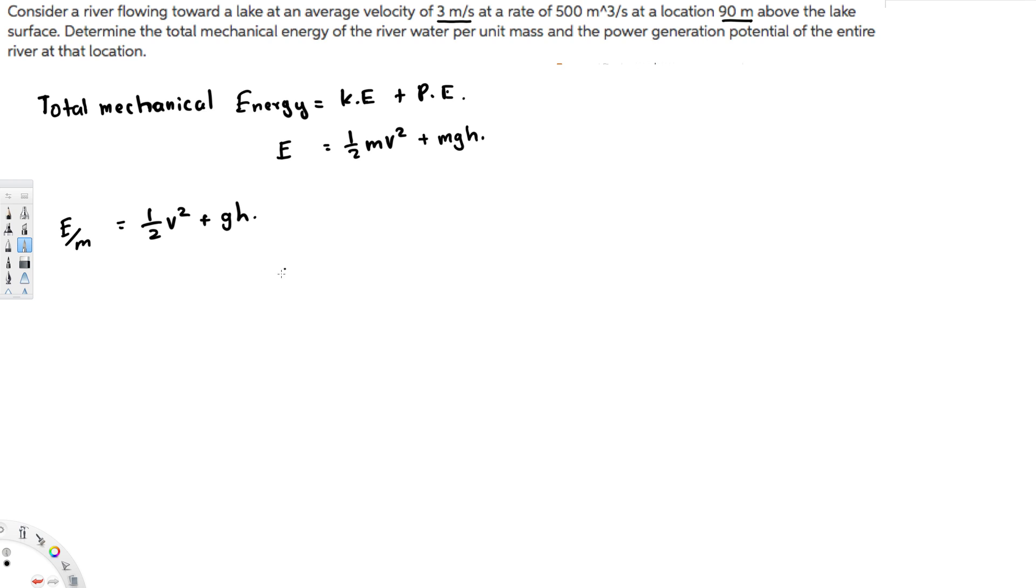So we can apply that one to find this answer. So let's apply everything and see how we get half times three square plus nine point eight one times 90. The height is 90 and this is going to be equal to eight hundred eighty seven point four joule per kilogram. So that answers the first question.